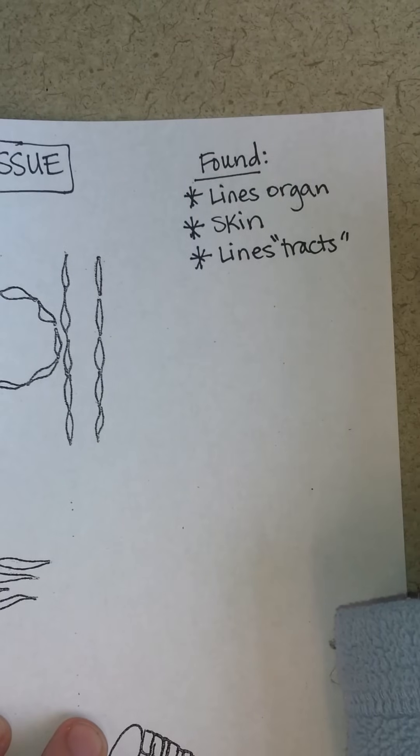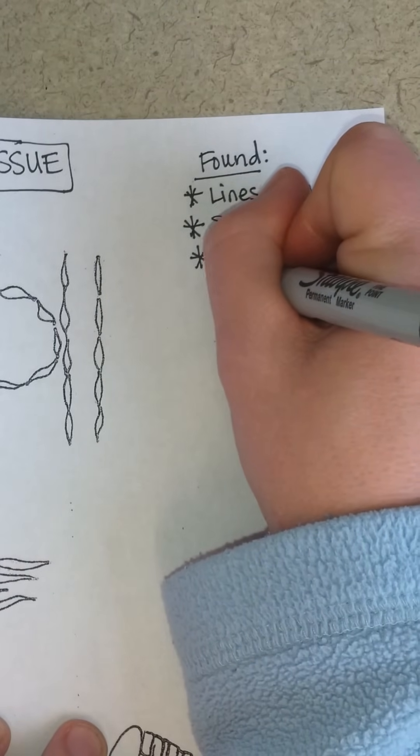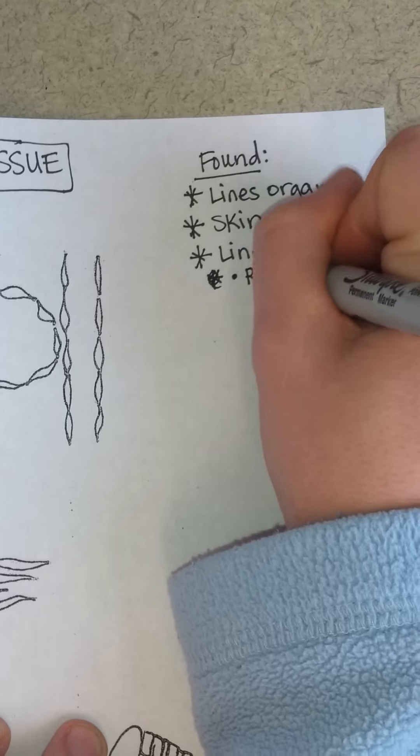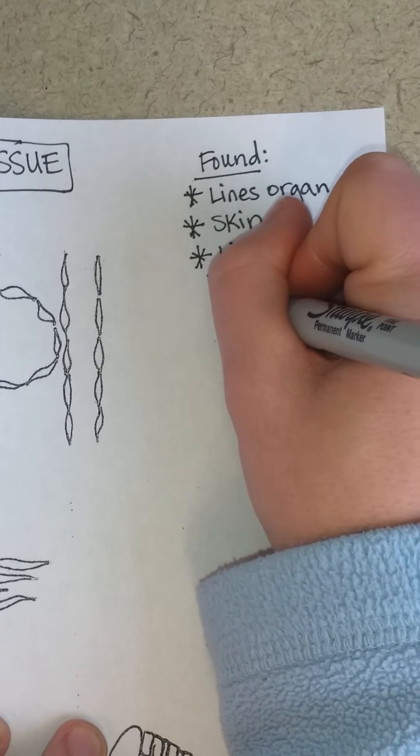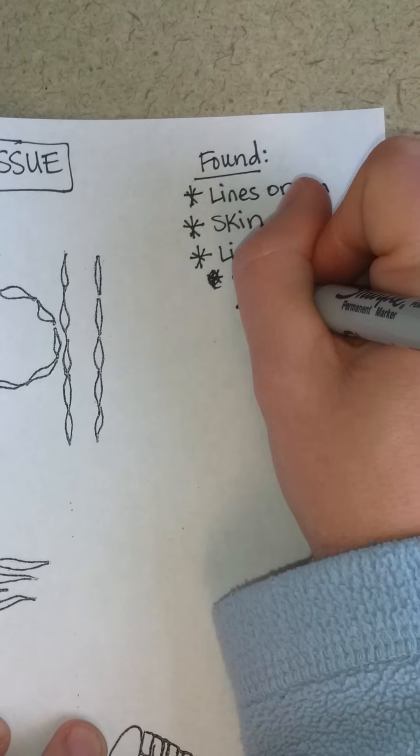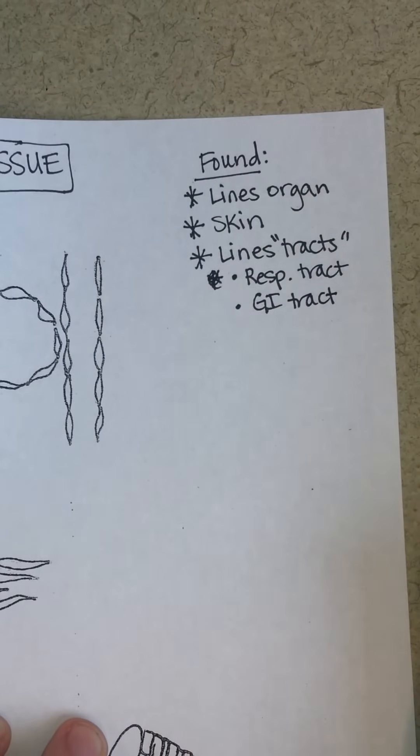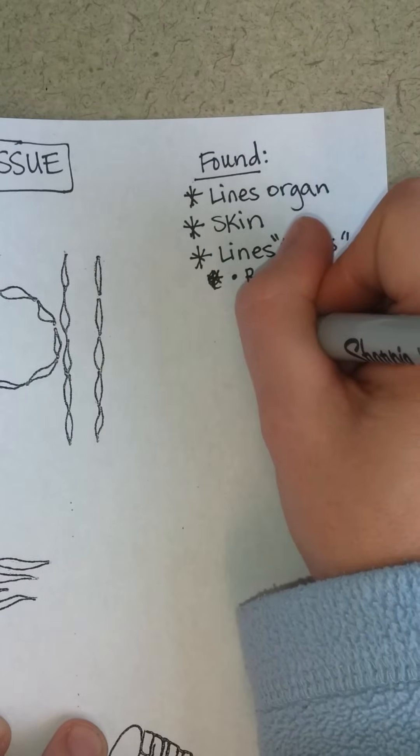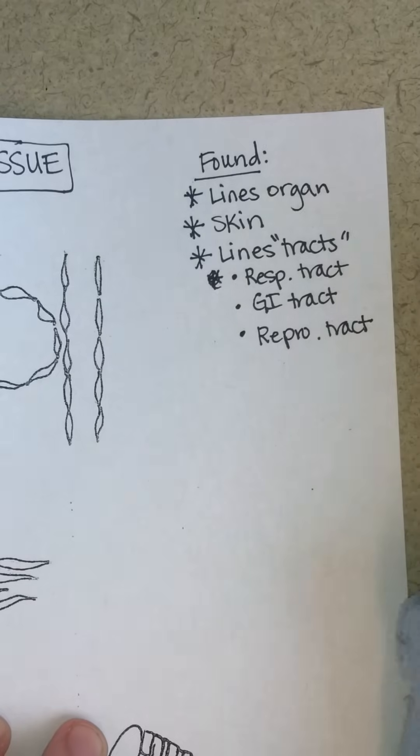It lines the tracts. Think about everything that's open to the outside. There's the respiratory tract, our breathing. There's the GI tract, our pie hole down to our anus. There's the reproductive tract, or the urogenital.